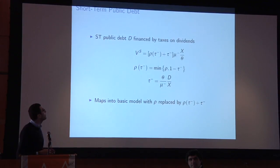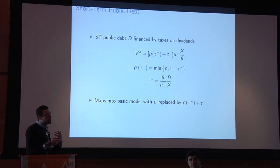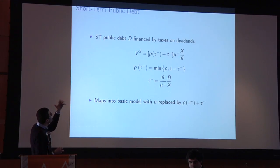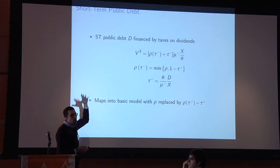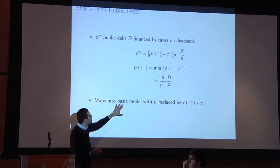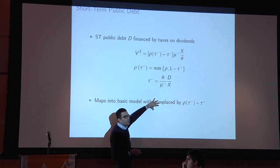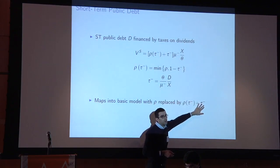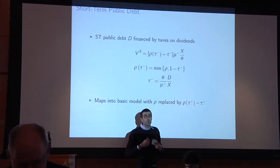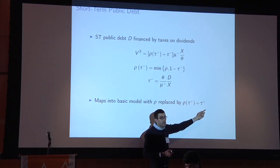To talk about QE precisely, I need to introduce public assets — public debt. I introduce short-term public debt financed by taxes on dividends. This maps into the model used so far but changes the securitization parameter to a combination of variables. What's going to be interesting is whether, when we do QE or issue public debt, we increase the supply of safe assets — it's all about understanding that function.